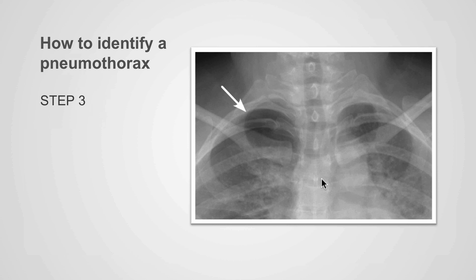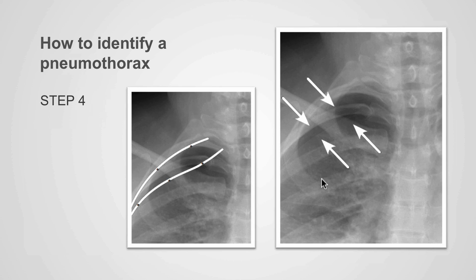The next step is to look for the edge of the lung. Here we can clearly identify a thin line which represents the visceral pleura. On this side of this line, there is increased blackness from the pneumothorax, confirming that this is a pneumothorax.